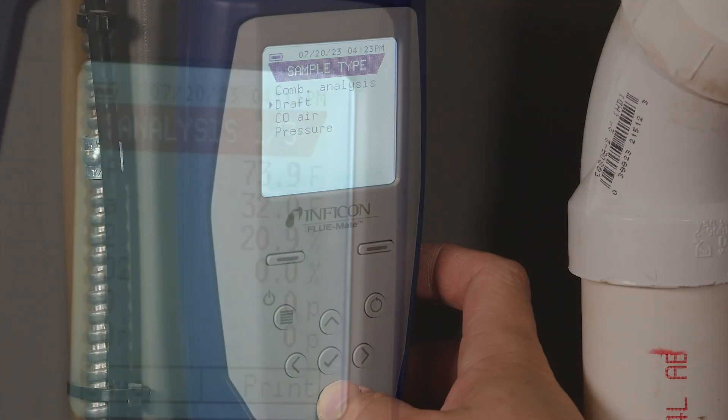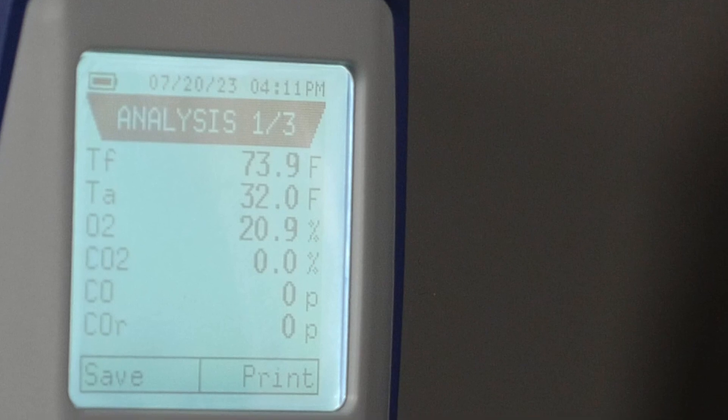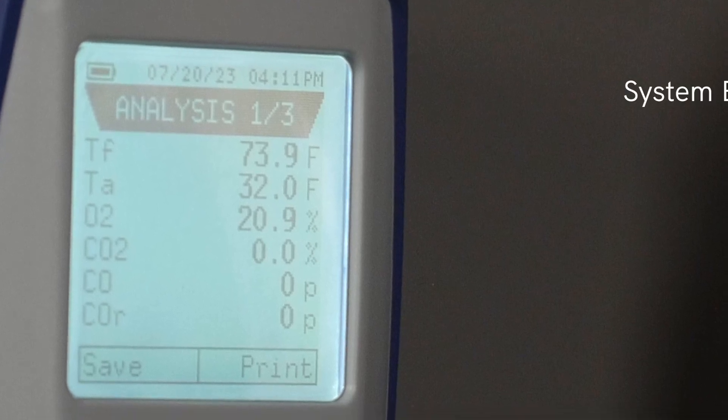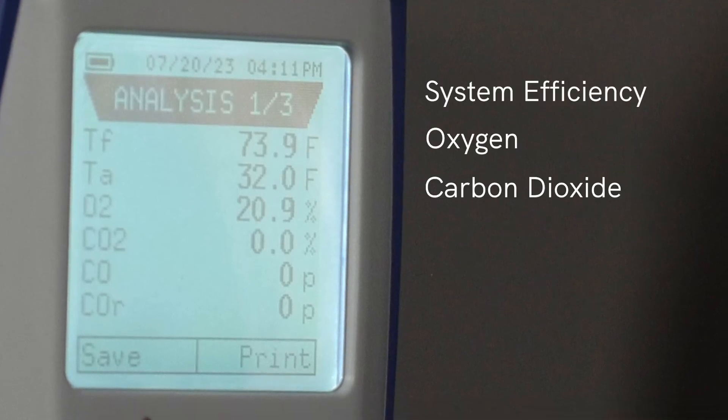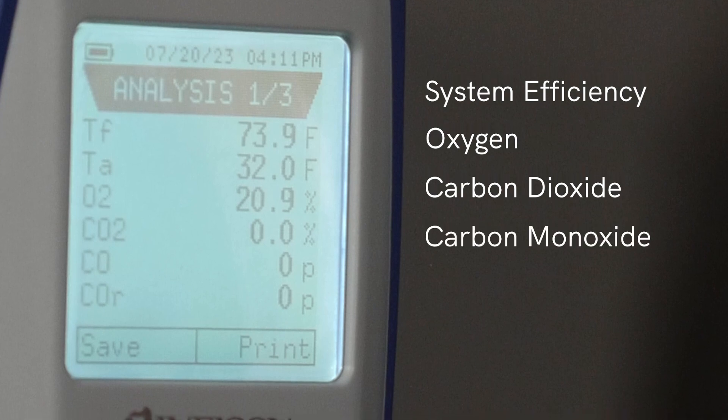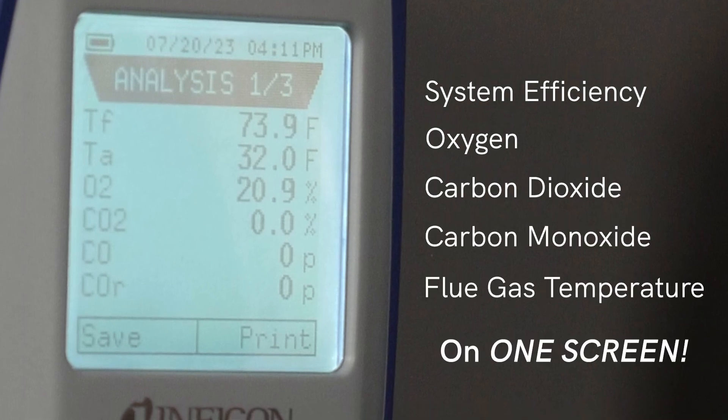Don't worry about switching between screens to check your numbers because all the important readings like system efficiency, oxygen, carbon dioxide, carbon monoxide, and flue gas temperature are displayed on one screen.